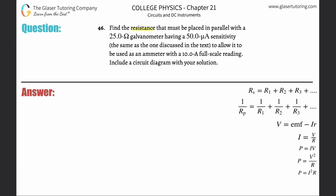Number 46: Find the resistance that must be placed in parallel with a 25 ohm galvanometer having a 50 milliamp sensitivity to allow it to be used as an ammeter with a 10 amp full scale reading.